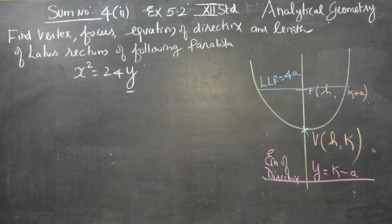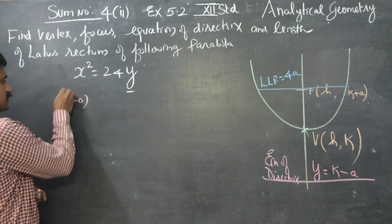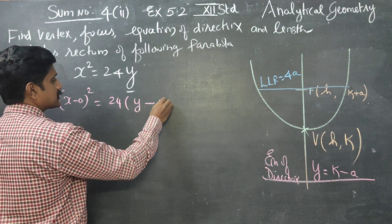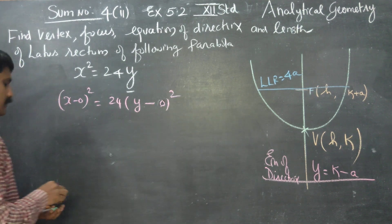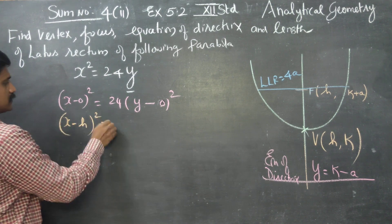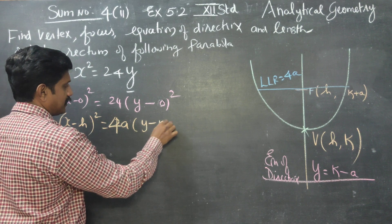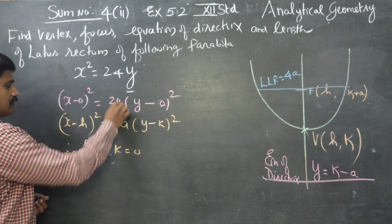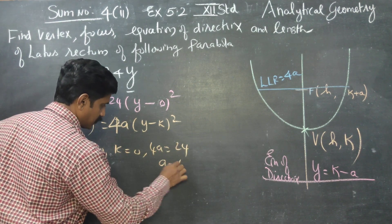According to this diagram, I am going to reframe this equation as (x minus 0) squared equals 24 into (y minus 0). The matching formula is: (x minus h) squared equals 4a into (y minus k). Therefore, my h is 0, k is 0, 4a equals 24, so a equals 6.